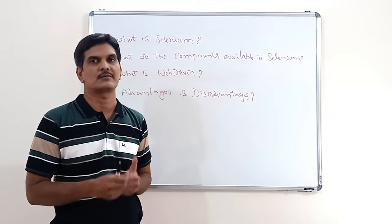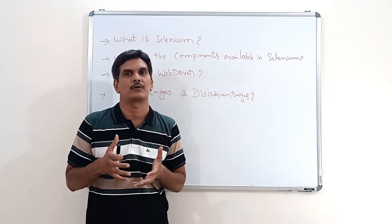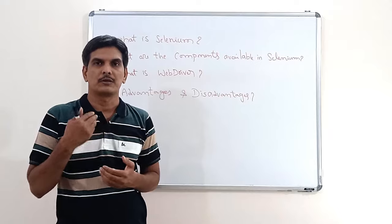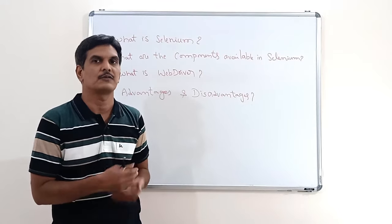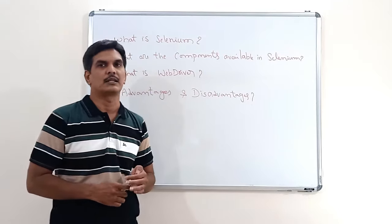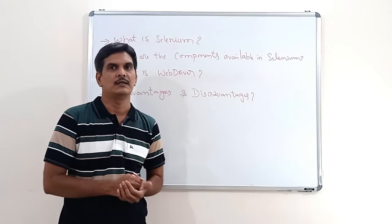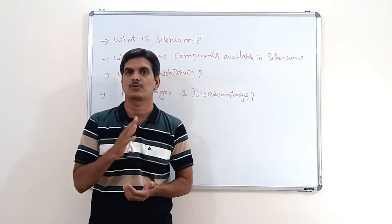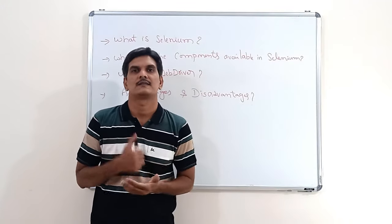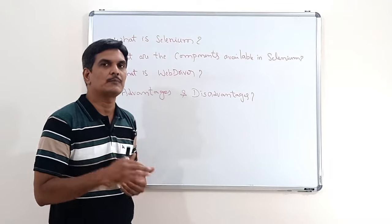So what is Selenium? Selenium basically automates the browser — that is the definition given by the Selenium project. If you have any application which can be opened on the browser, we can automate it. Selenium contains multiple components: Selenium IDE, Selenium WebDriver, Selenium Grid, and Selenium RC. These four components are what we call the Selenium family or Selenium suite.